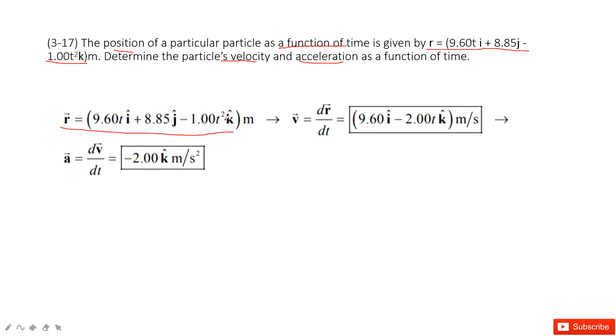And then this is constant, zero. And then 1 times 2 times t, so negative 2t there. And then we find the velocity is also a function with time t.